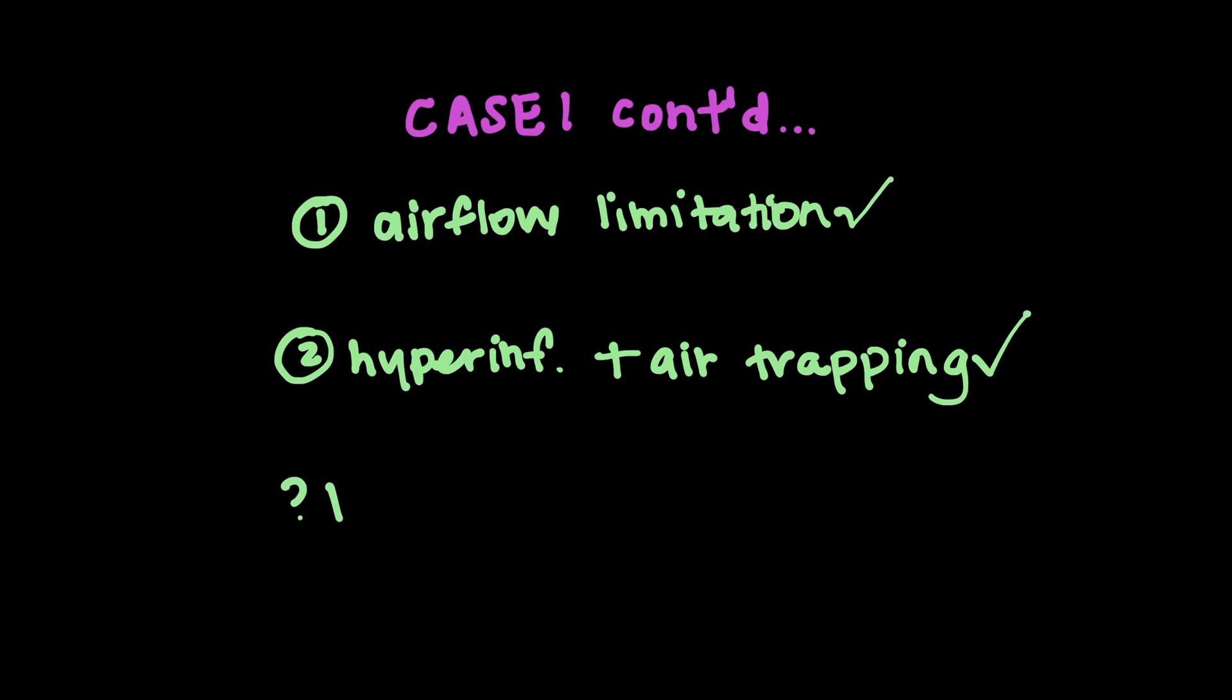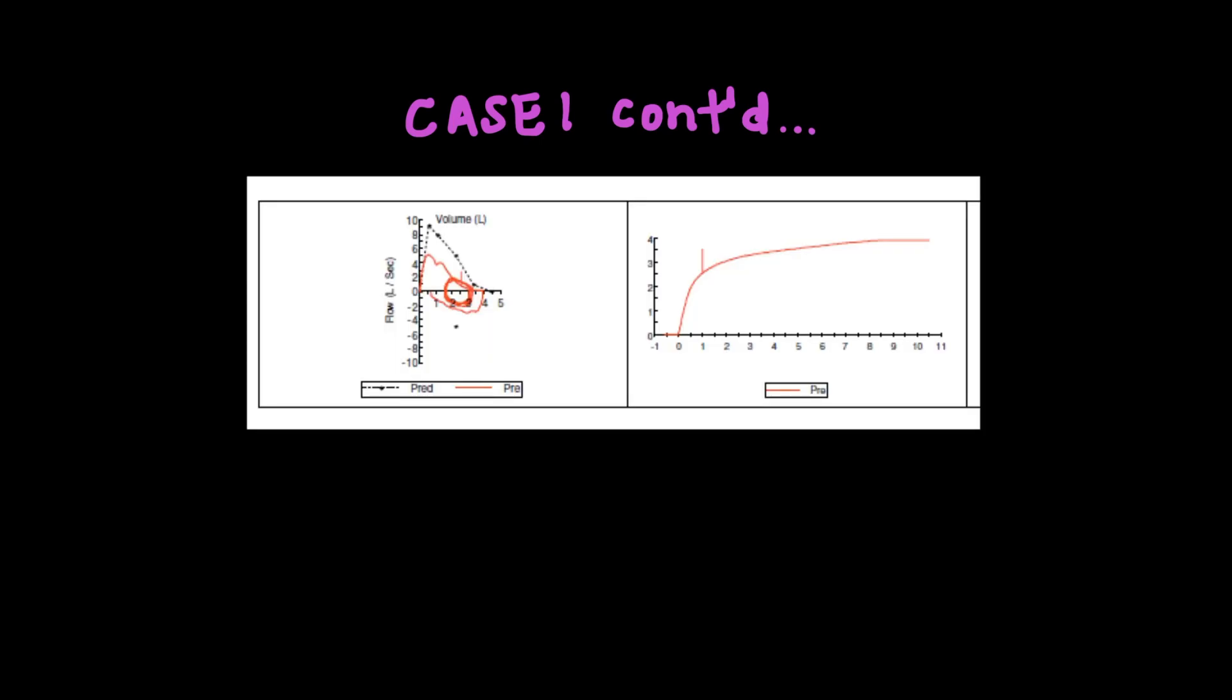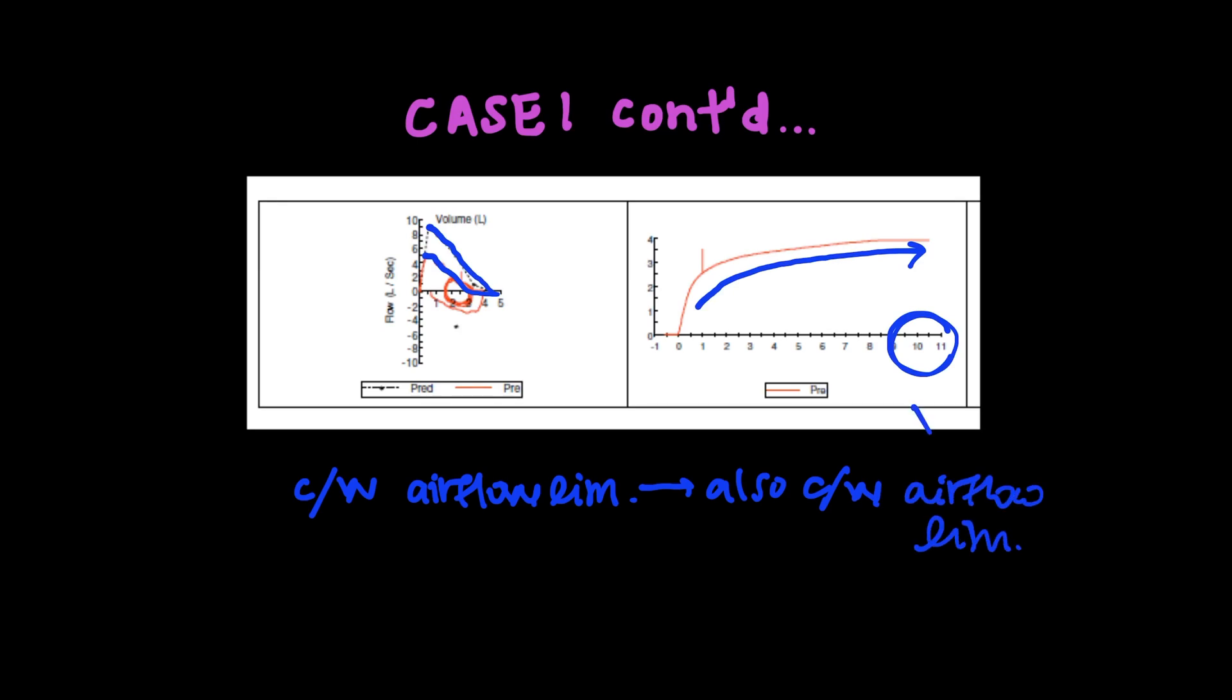So based on this, what do you guys think the flow volume loop is going to look like? All right. Well, here it is. So essentially what you can see here is the normal in the first line and the patients in the second line. And you can see that it slopes down consistent with airflow limitation. On this line, what's interesting is this is the volume against time, and you can see that the patient is breathing out forever, also consistent with airflow limitation. And on a physical exam, that is called prolonged expiratory phase. So what do you think this guy has? So he has asthma and he's an interesting guy. He has it secondary to something called Churg-Strauss.